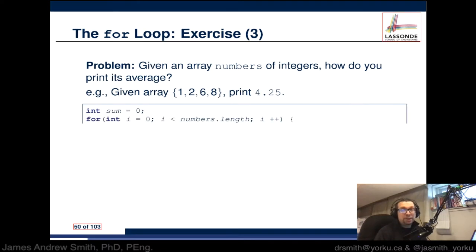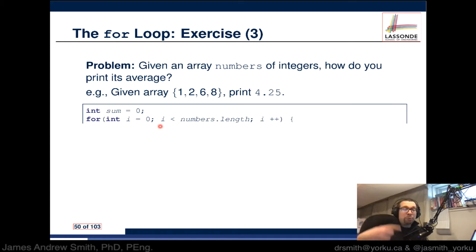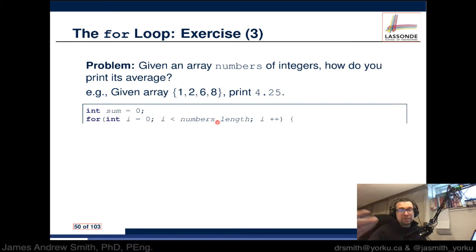Next we have a for loop. The for loop line has three parts: first, the initialization — we set up the counter variable 'i' to 0. Then a semicolon, and in between the two semicolons we have the condition in which the for loop will continue to cycle, which is when the counter variable 'i' is less than the length of the array called 'numbers'.